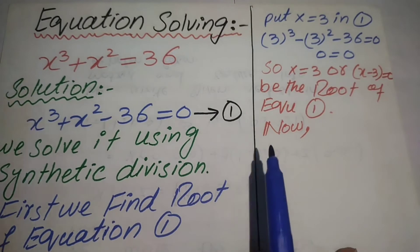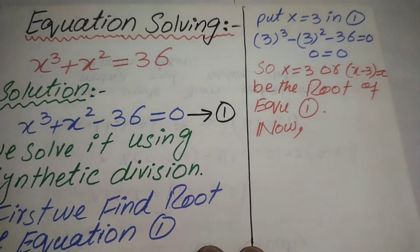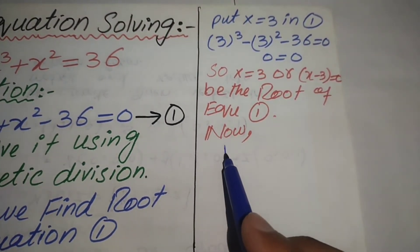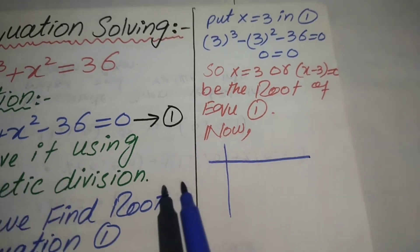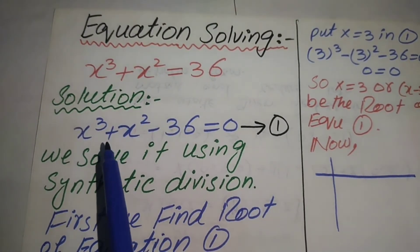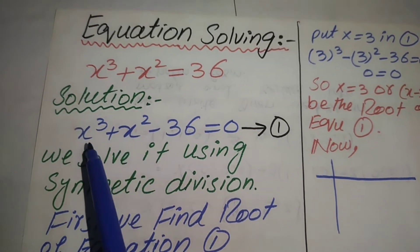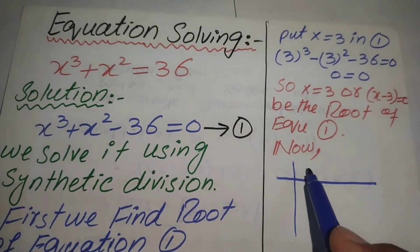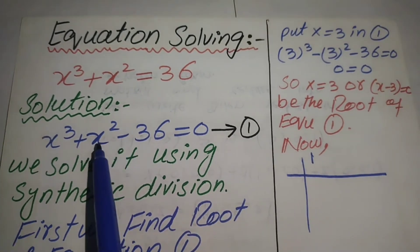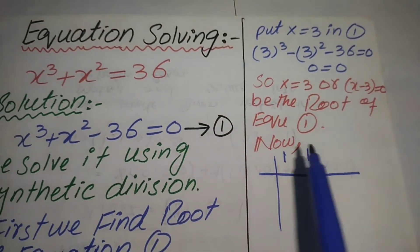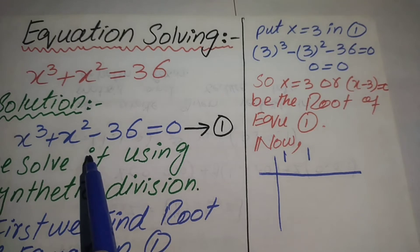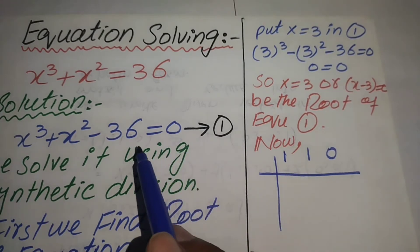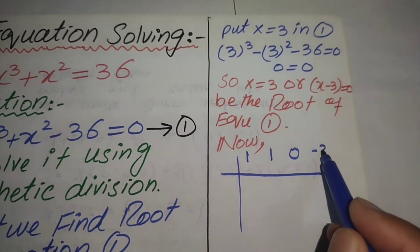Now we apply synthetic division. First we find the coefficients of each term in the equation. The coefficient of x³ is 1, the coefficient of x² is also 1, the x term is not present so its coefficient is 0, and the constant term is −36.